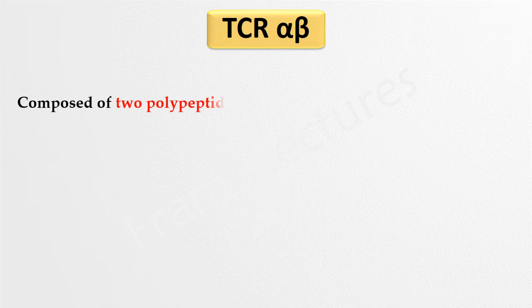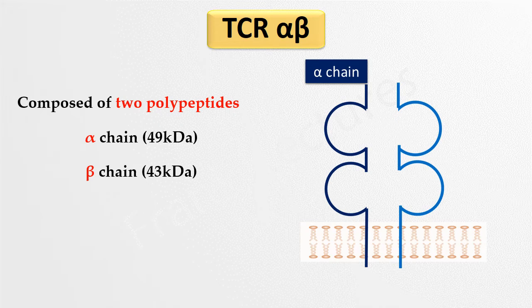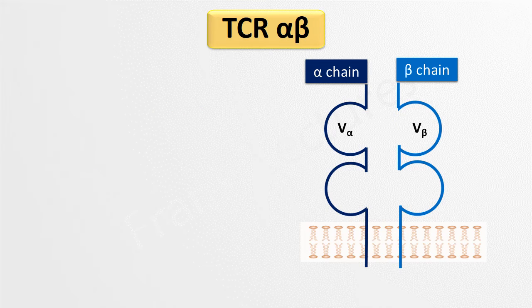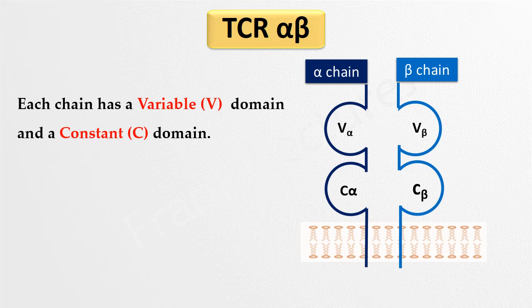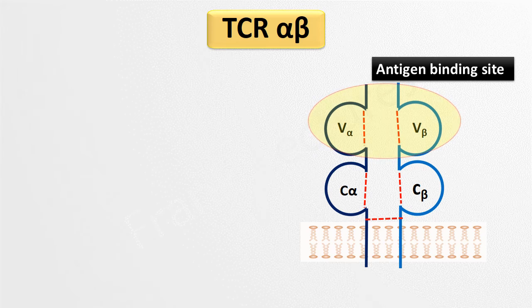TCR alpha-beta is composed of two polypeptides: an alpha chain with a molecular weight of 49 kilodaltons, and a beta chain with a molecular weight of 43 kilodaltons. Each chain has two extracellular domains, a transmembrane portion, and a cytoplasmic tail. The outermost domain is the variable domain (V) and the other is the constant domain (C). Each domain is stabilized by an internal disulfide bond, and the variable domains of both the alpha and beta chains together form the antigen binding site.